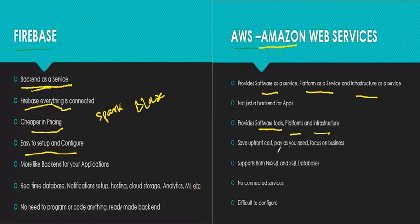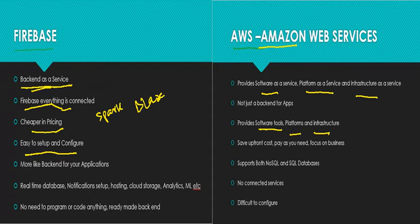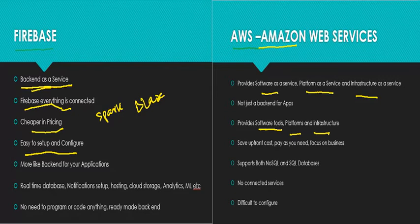Firebase is easy to set up and configure. Amazon is not as easy because you have so many things — software, platforms, infrastructures — and it's much more flexible but takes a lot of time to configure. In Firebase, all things are connected together, whereas in Amazon, you have to separately combine cloud storage with database, app notifications, analytics, machine learning, and everything else. Even if you only need AWS as your backend, you need to manually combine cloud messaging, hosting, analytics, machine learning, and authentication.